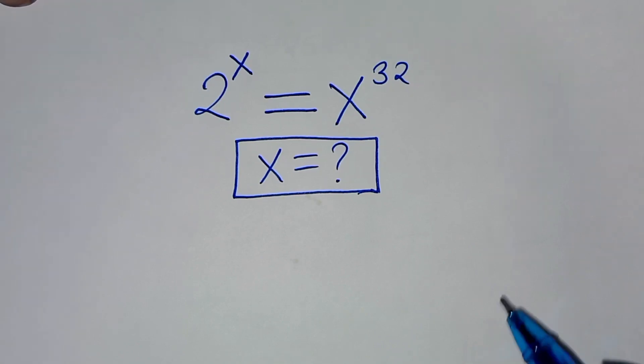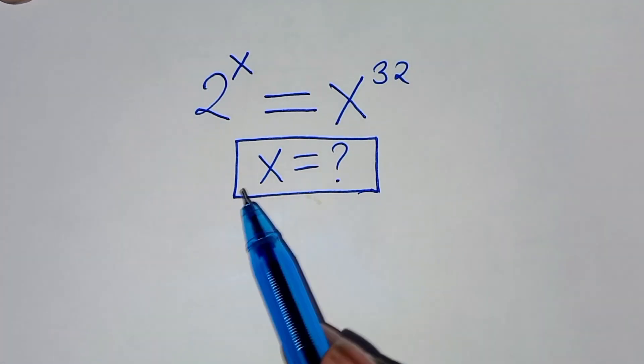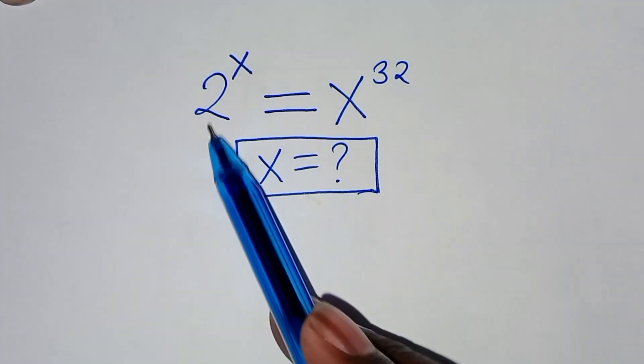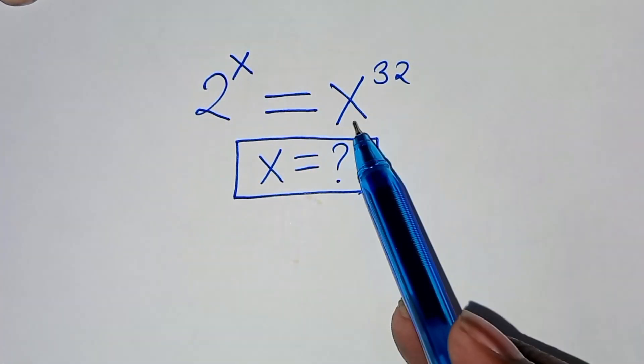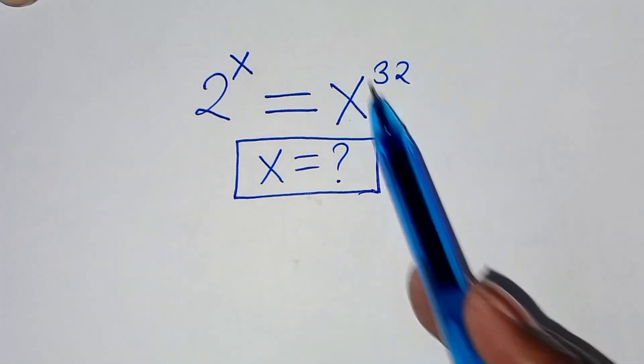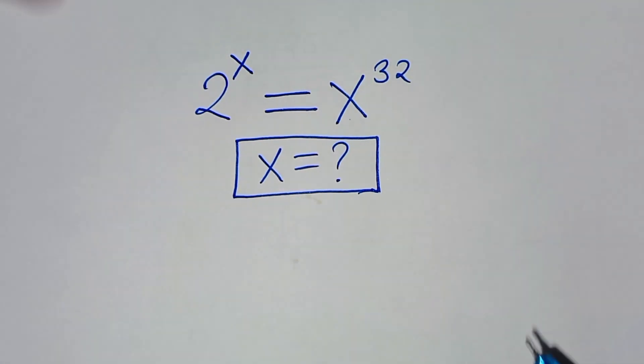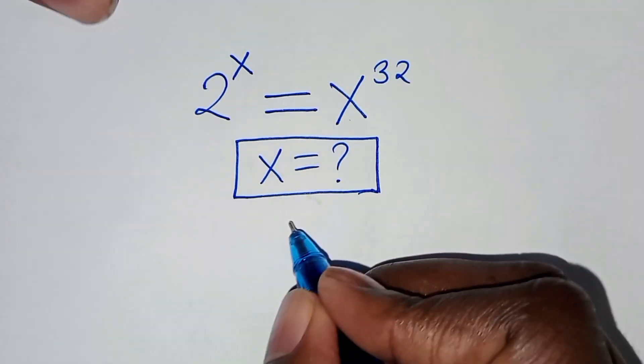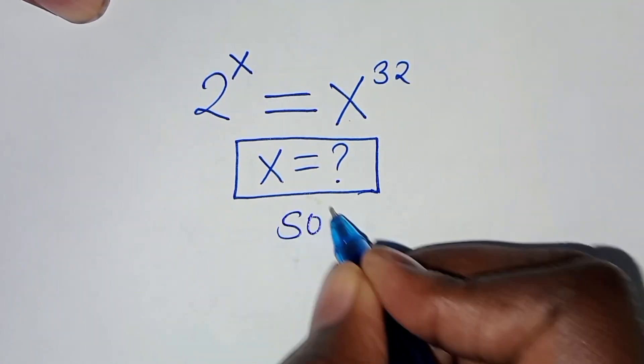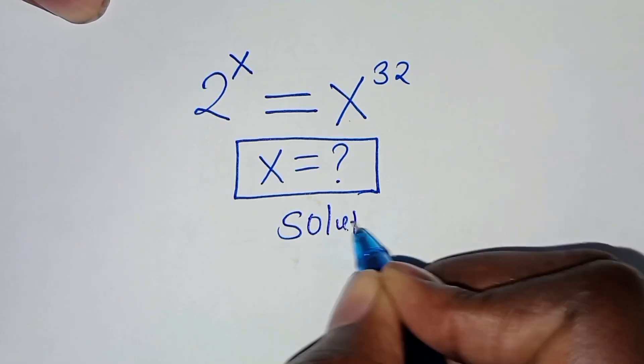Welcome everyone. We are going to solve this algebra problem: 2 to the power x equals x to the power 32. What is the value of x? Let's work through the solution.